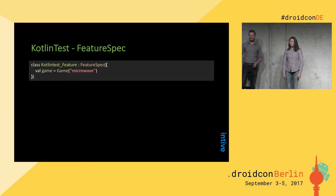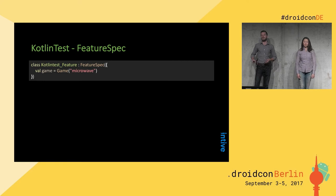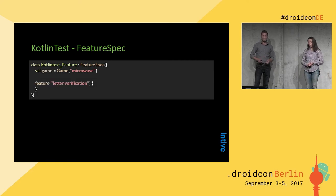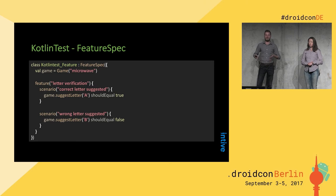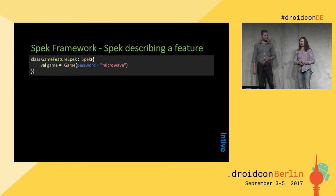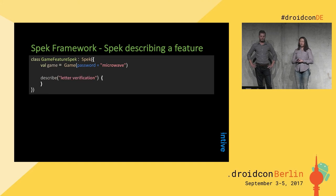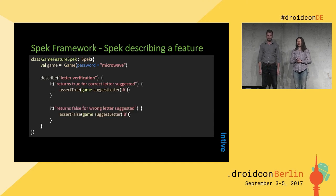The next Kotlin test style is FeatureSpec. Again we have to extend the FeatureSpec class. At the top of the lambda I create a new game object with a mock password. As the name suggests, we will test a feature here — in this case, letter verification. Inside the feature block we can add our scenarios, such as 'correct letter suggested' or 'wrong letter suggested'. And describing a feature using Spek: we extend the Spek class, create our tested object, then call the describe function with a description string, and inside we put our it blocks. So instead of feature/scenario in Kotlin test, we have a describe/it structure.